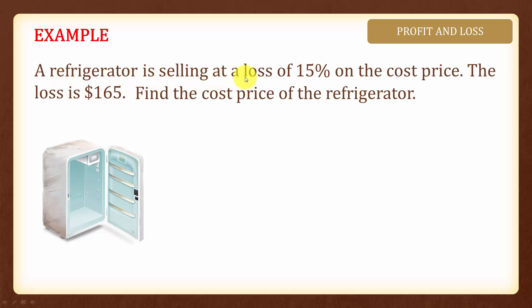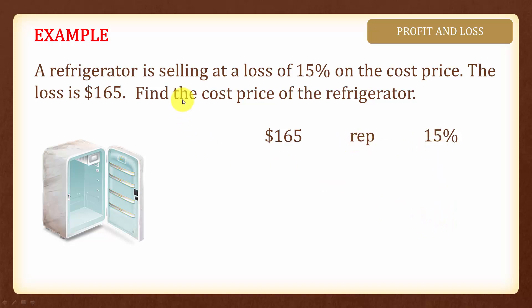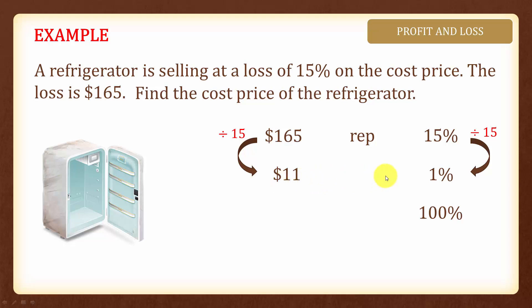Next, a refrigerator is selling at a loss of 15% on the cost price. The loss is $165 and we are asked to find the cost price. We will start with $165 and determine how many percent this represents. Since $165 is the loss and the loss is 15%, therefore $165 represents 15%. We are finding the cost price, which is 100%, the original price. In order to find 100%, let us first find 1% by dividing both sides by 15.